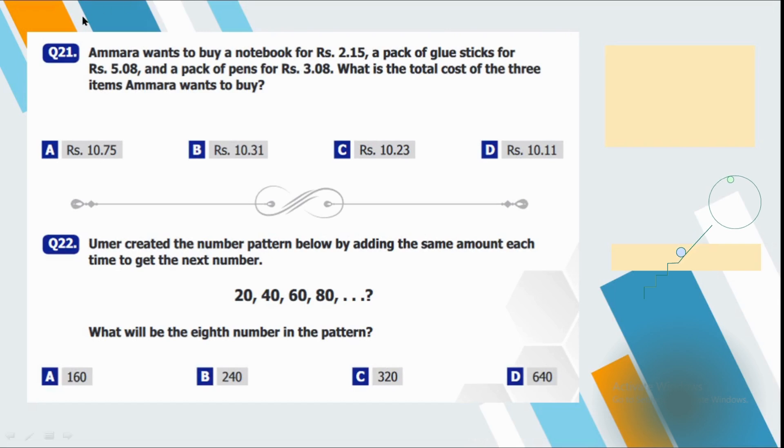Question number 21. Amara wants to buy a notebook for Rs. 2.15, a pack of glue sticks for Rs. 5.08 and a pack of pens for Rs. 3.08. What is the total cost of the three items Amara wants to buy? For that purpose, we will simply add them up, make a sum and when you will add the answer will be 10.31. So B will be our correct option here.